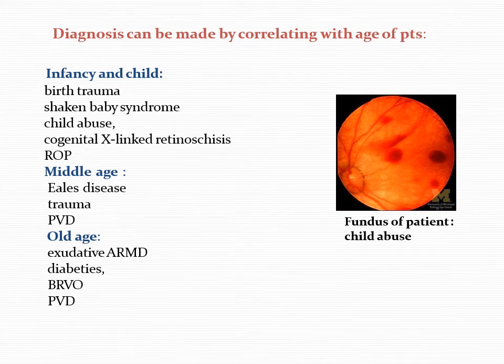The diagnosis of vitreous hemorrhage can be made by correlating with the age of the patient. In infancy and childhood, causes include birth trauma, shaken baby syndrome, child abuse, congenital X-linked retinoschisis — where there is splitting of the neurosensory retina — and retinopathy of prematurity. In middle age, there can be Eales' disease, ocular trauma, or posterior vitreous detachment. In old age, causes include exudative age-related macular degeneration, diabetic retinopathy, branch retinal vein occlusion, and again PVD.